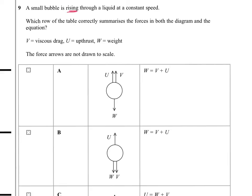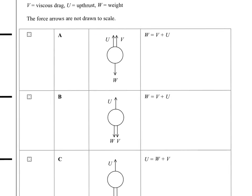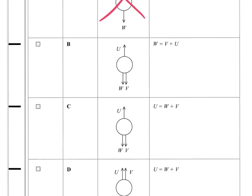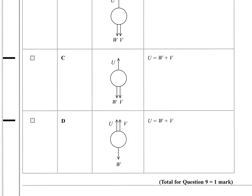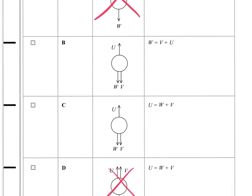So if we take a look at these, we can rule out A, because it has two things acting up. We're only looking for U acting up. We can also rule out D. So it's between B and C. The diagrams are both right, but the equation in B is wrong. So it's C that's correct here.